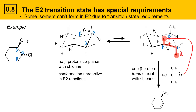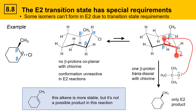That leads to only one alkene product in this reaction. The other alkene — a cyclohexene — is actually more stable, but it's not a possible product because there's no transition state that allows the bond to form between those carbons in that alkene.